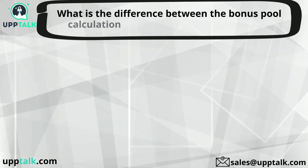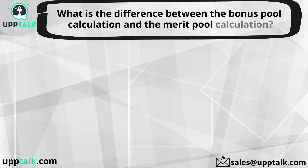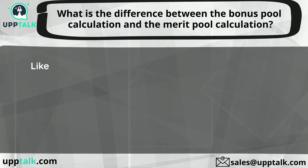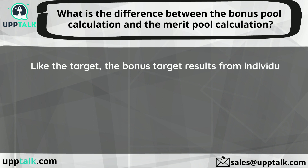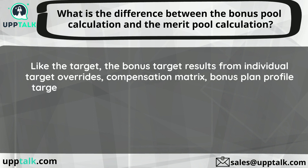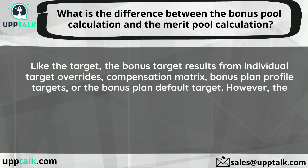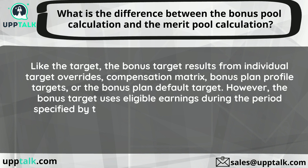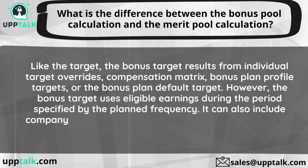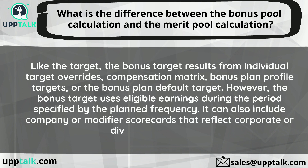What is the difference between the bonus pool calculation and the merit pool calculation? Like the merit target, the bonus target results from individual target overrides, compensation matrix, bonus plan profile targets, or the bonus plan default target. However, the bonus target uses eligible earnings during the period specified by the plan frequency. It can also include company or modifier scorecards that reflect corporate or division performance.